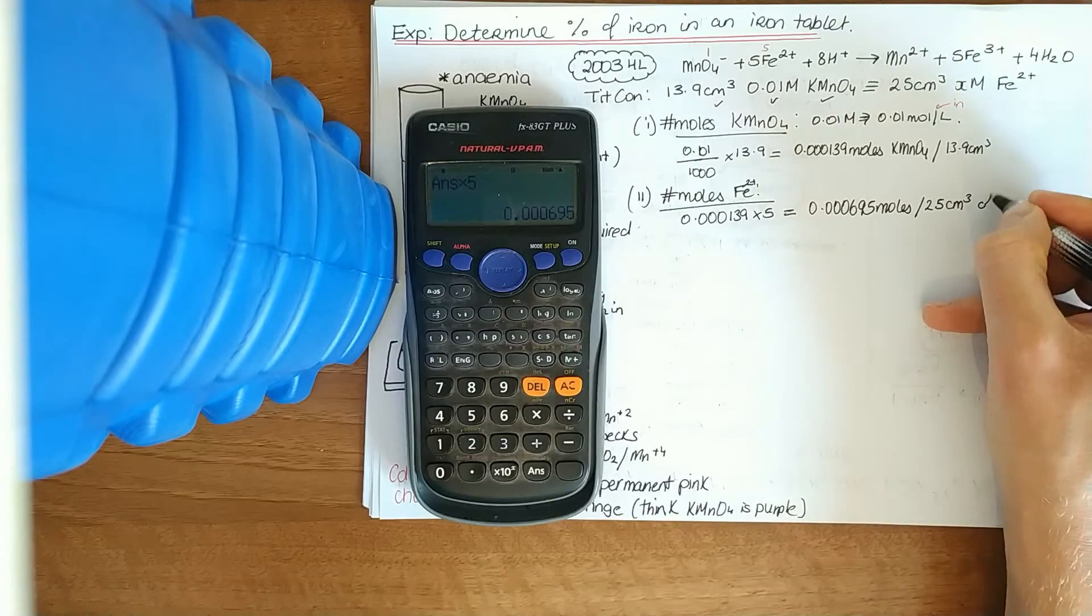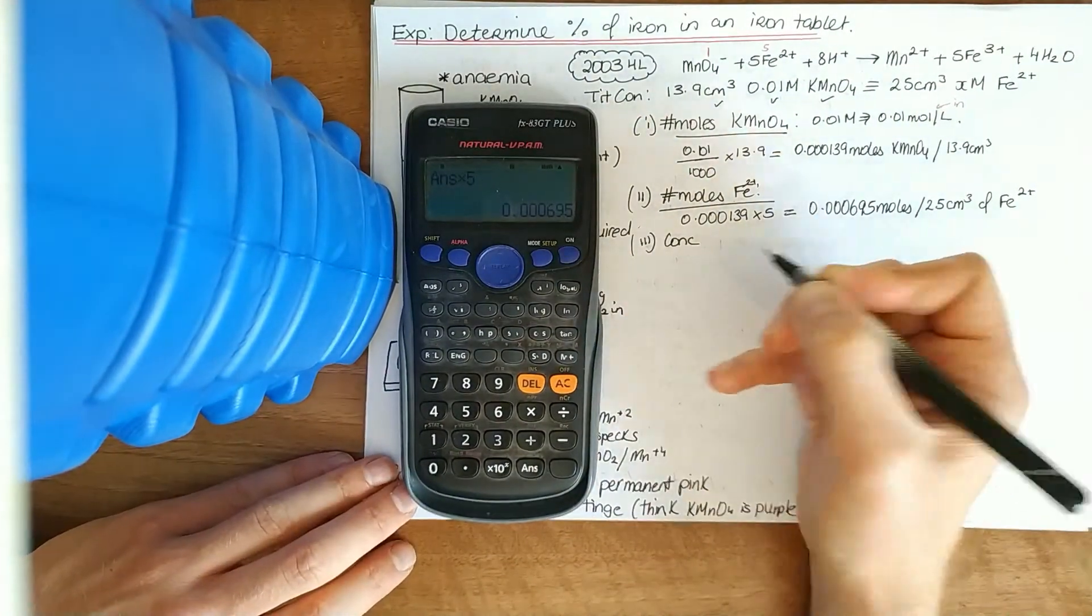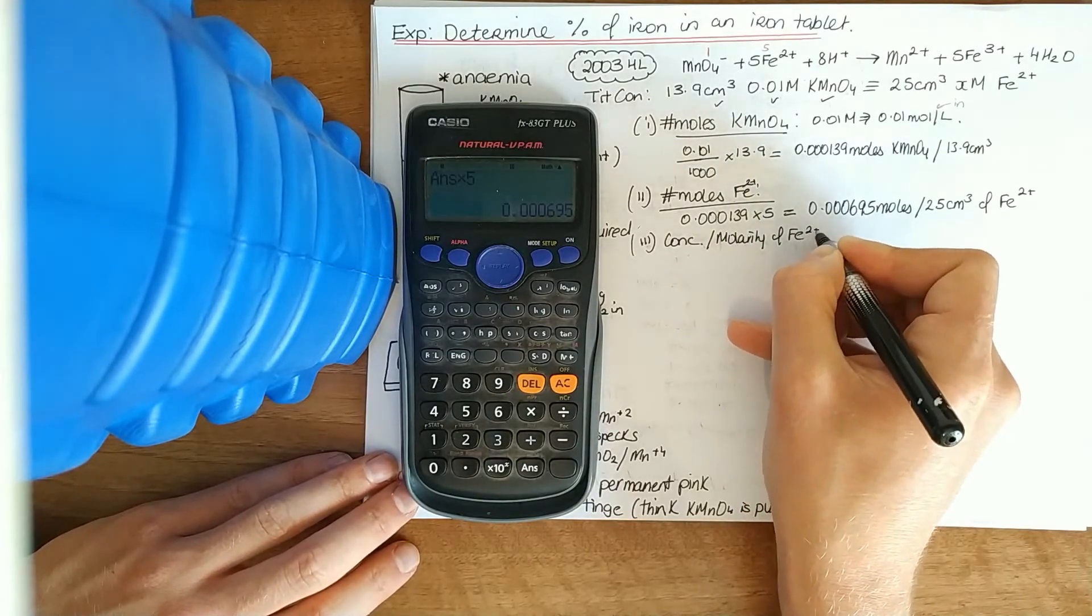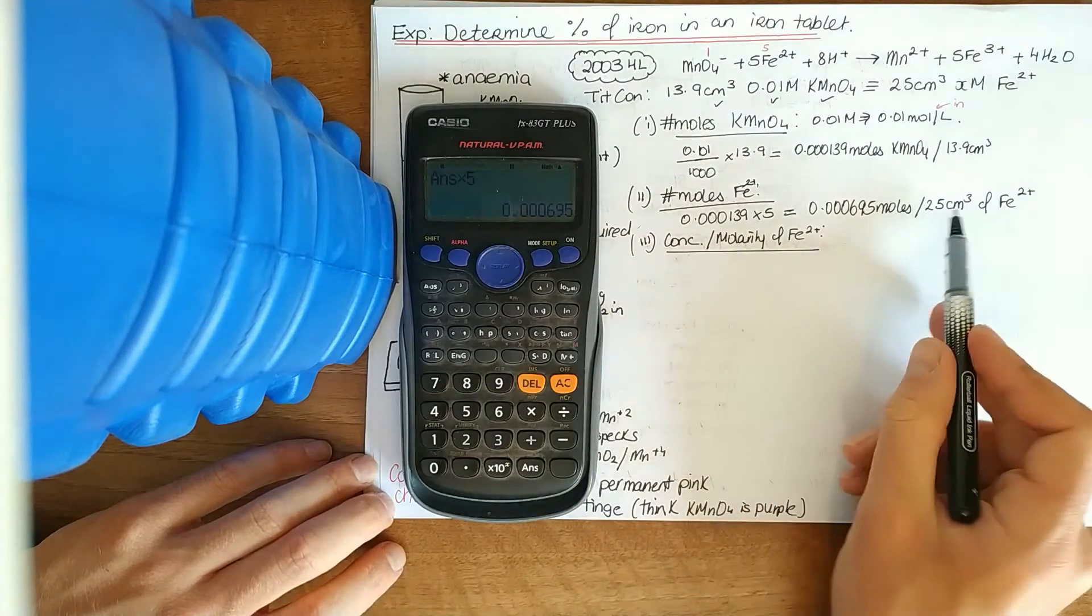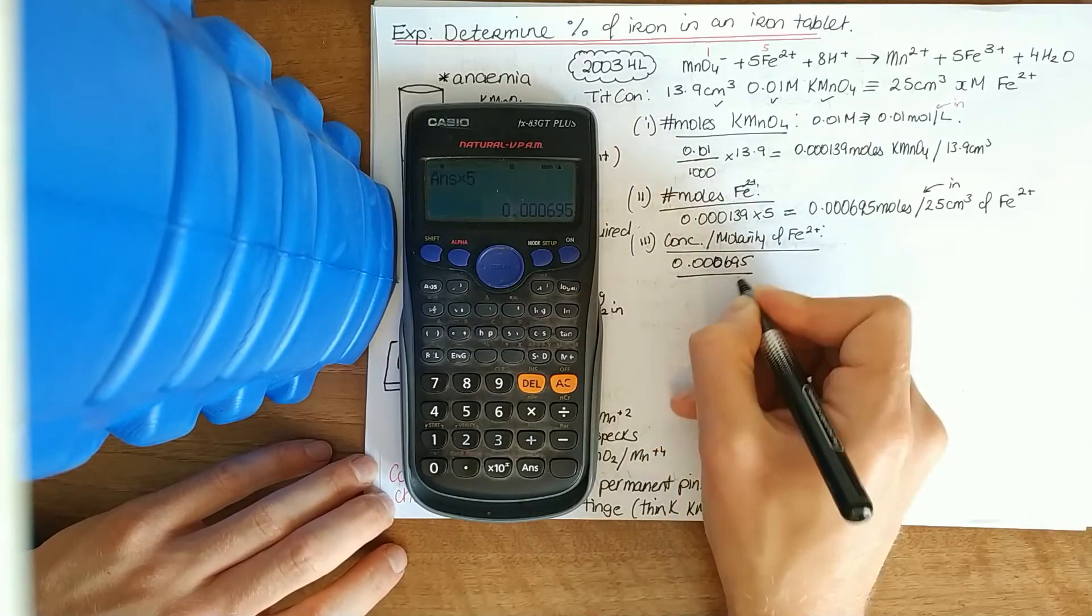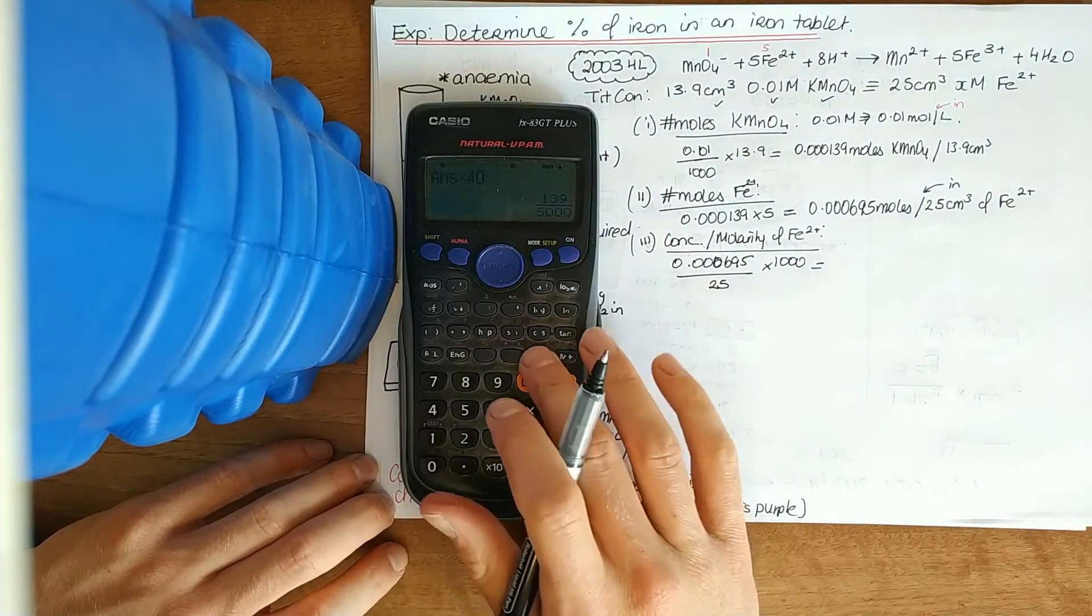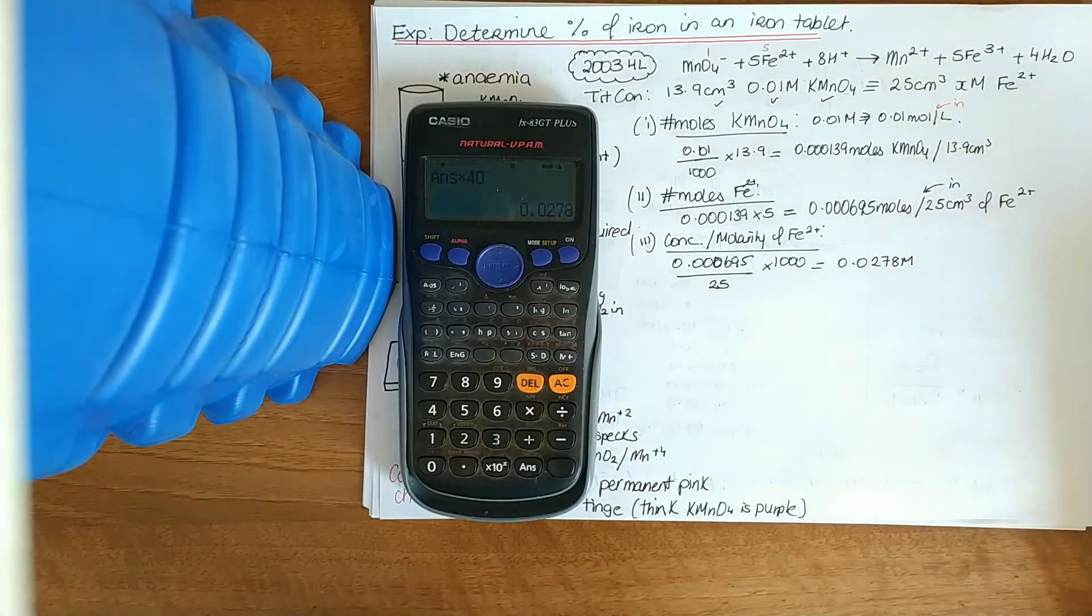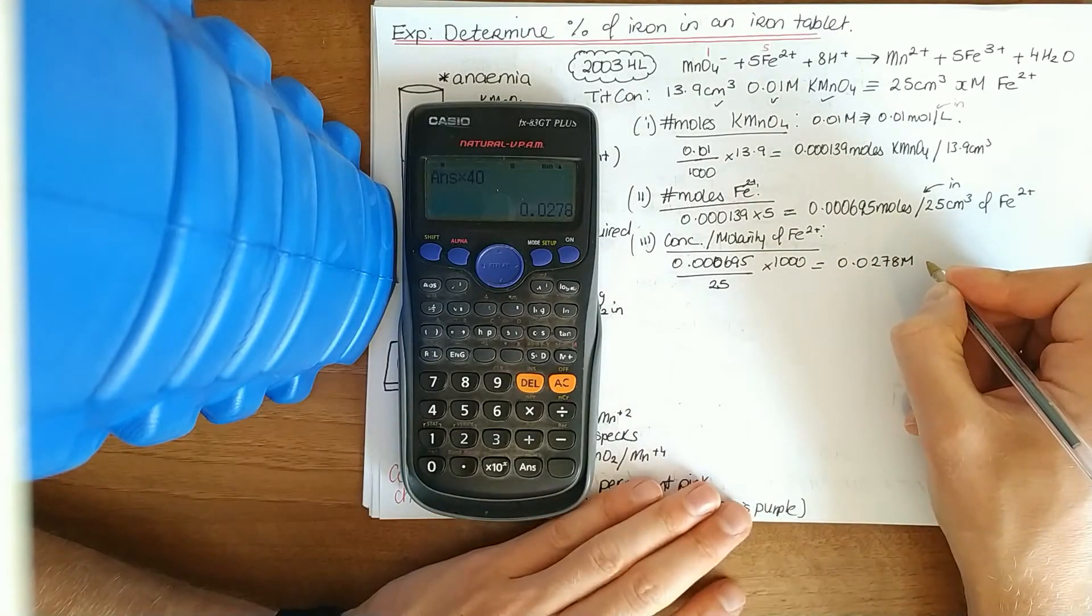The number of moles of Fe or Fe2+, multiply by 5. We get 0.000695 moles per 25 centimetres cubed. That volume is crucial because that allows us to work out the molarity. The next thing they'll ask you for the molarity or the concentration. They might even go to a concentration in grams per litre, but you must get the moles per litre first of all.